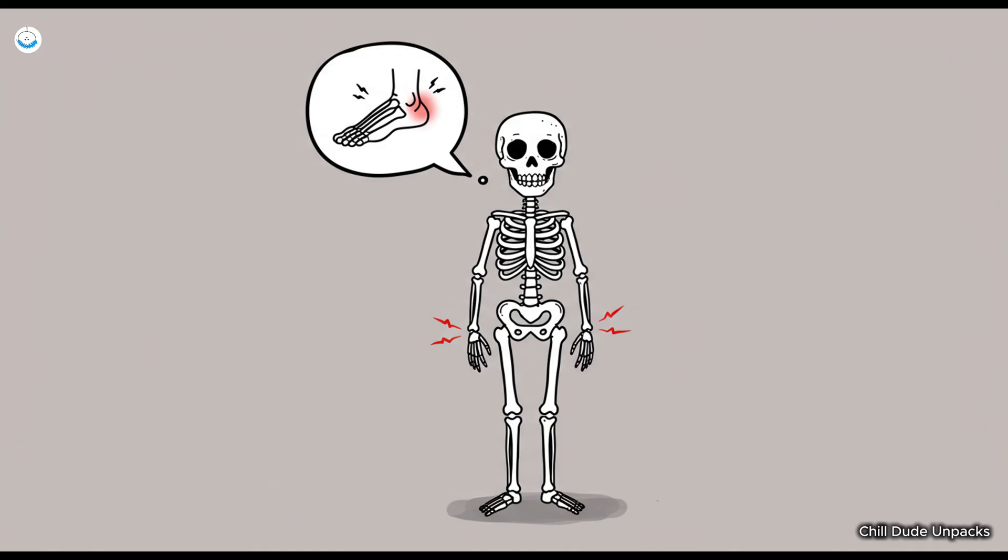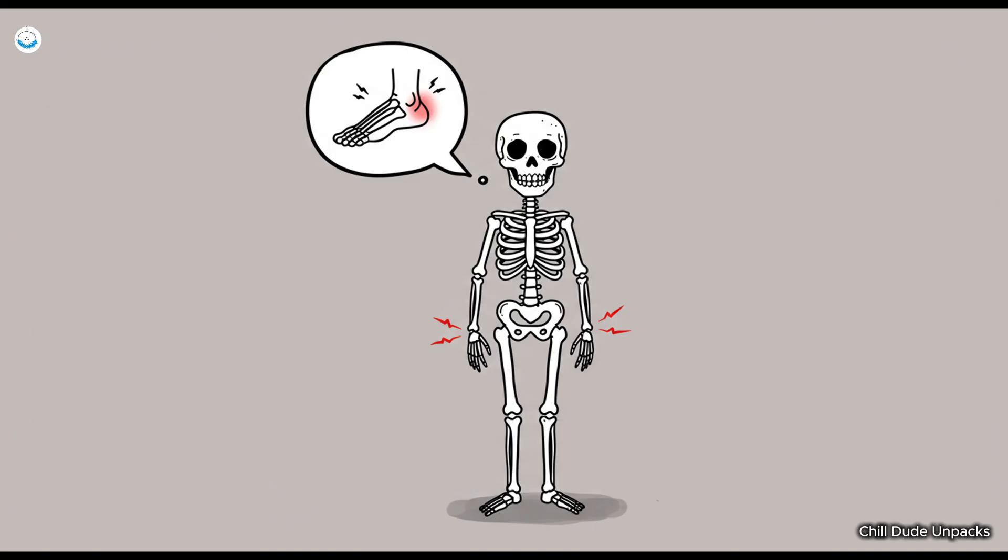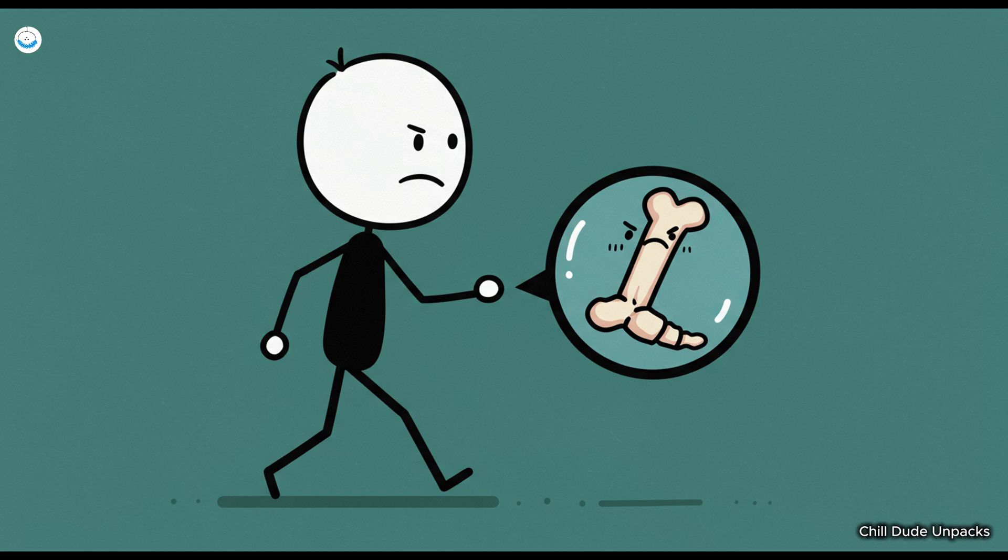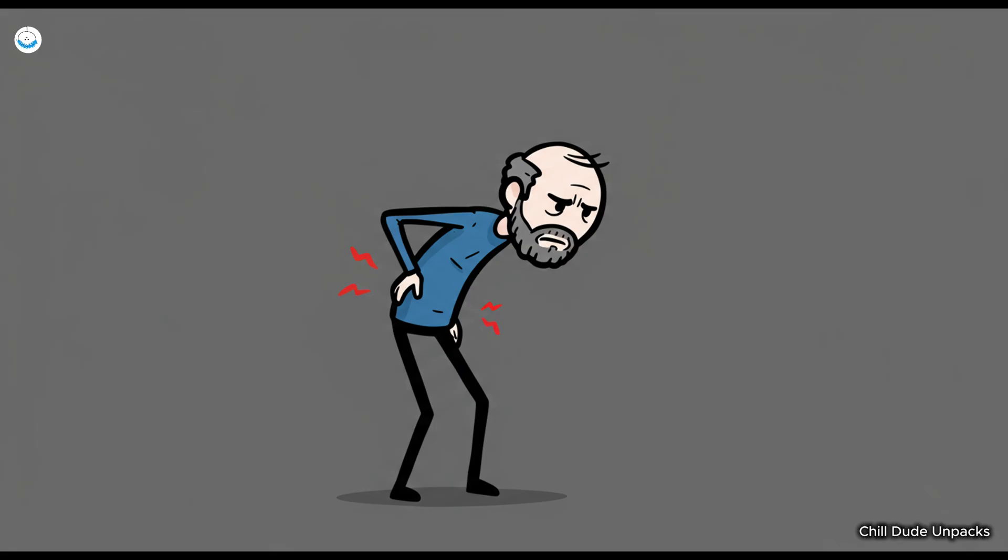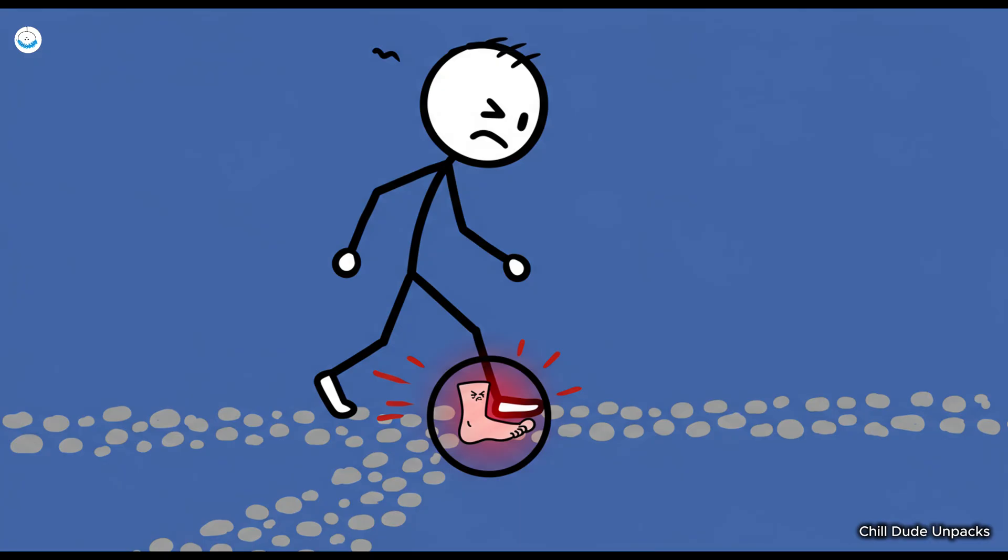While your bones are regenerating, they're also secretly watching you. They have this memory function. Yes, your bones can remember things like if you've had an injury in the past. It's kind of like how your brain remembers where you left your keys, except your bones remember when you twisted your ankle 10 years ago. And they'll make sure you never forget it. So next time you're in pain, don't just blame the fact that you're getting older. Your bones are probably holding a grudge against you for that one time you tried to walk around barefoot on gravel.